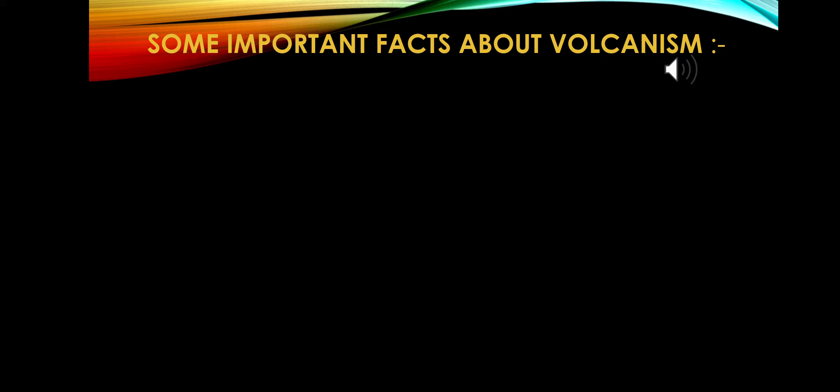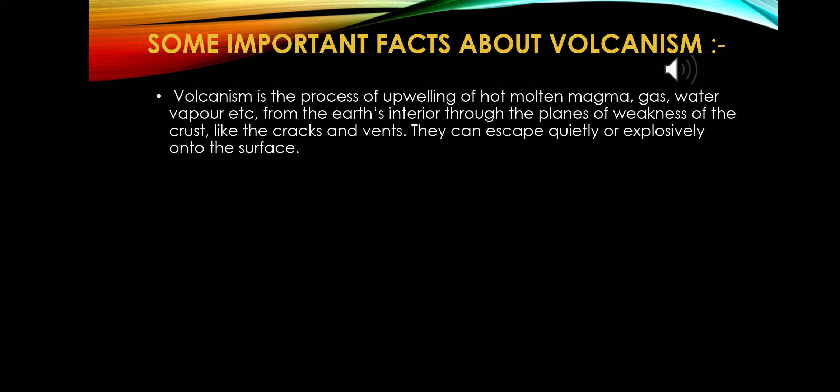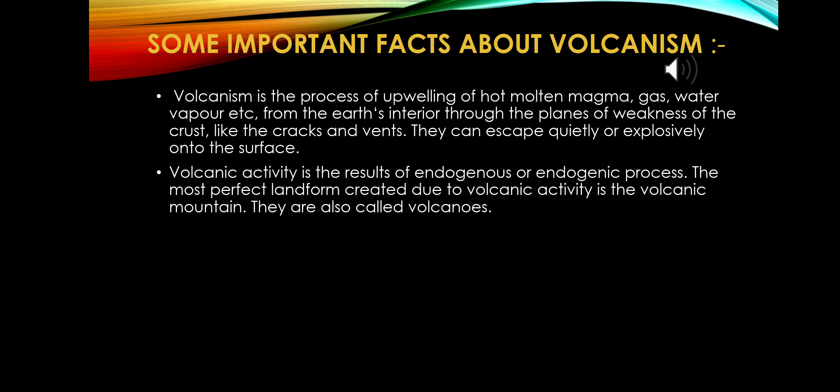First we will discuss about some important facts about volcanism. Volcanism is the process of the upwelling of hot molten magma, gas, water vapor, etc., from the earth's interior through the planes or weaknesses of the crust — meaning cracks and vents. They can escape quietly or explosively onto the surface. Volcanic activity is the result of endogenous, or endogenic, processes, meaning processes which happen in the interior of the earth.